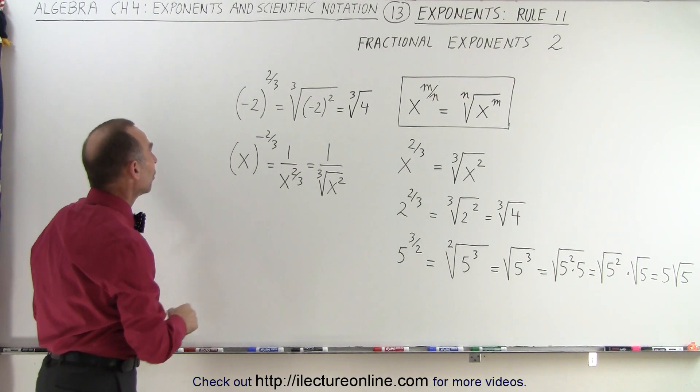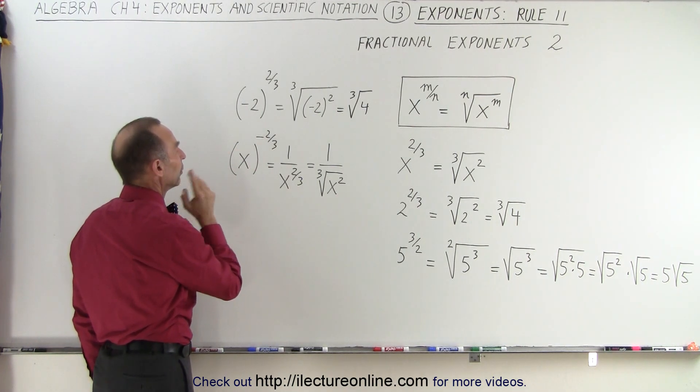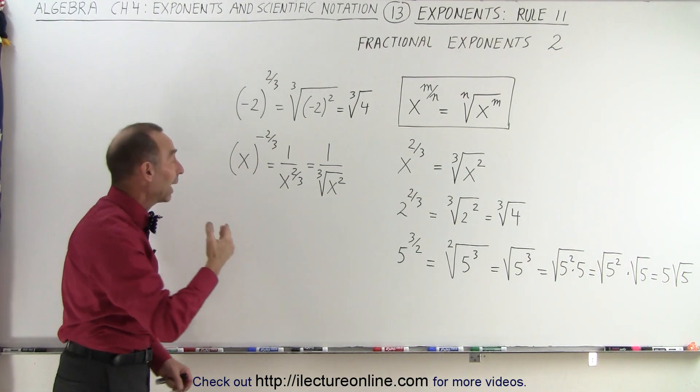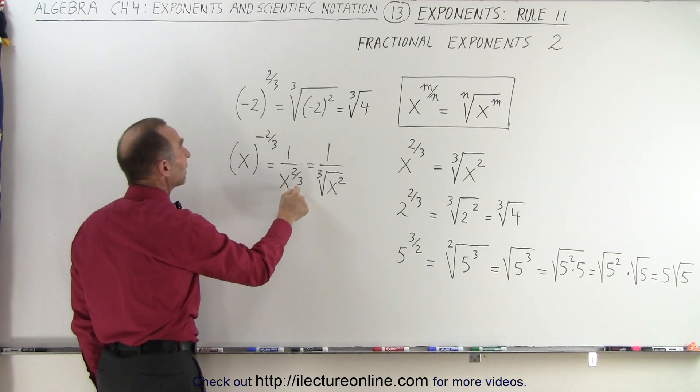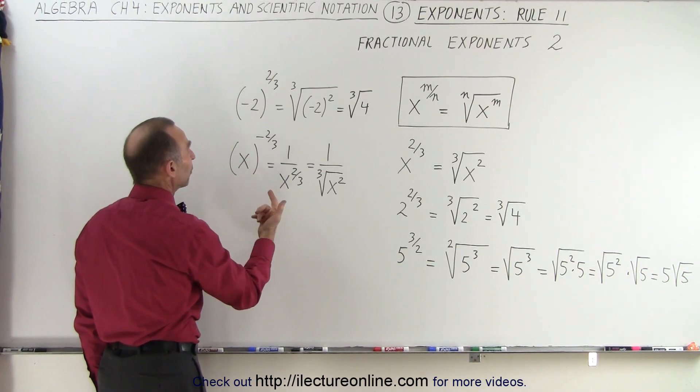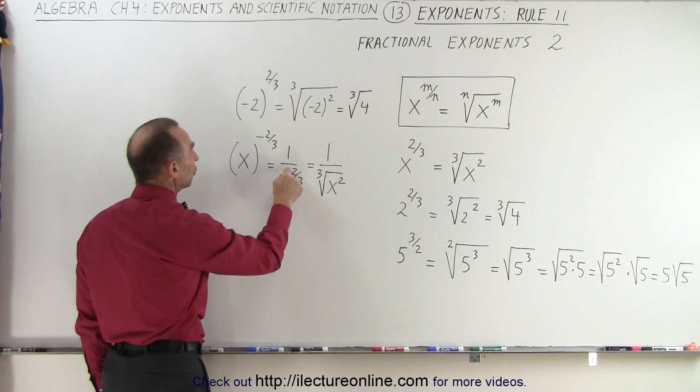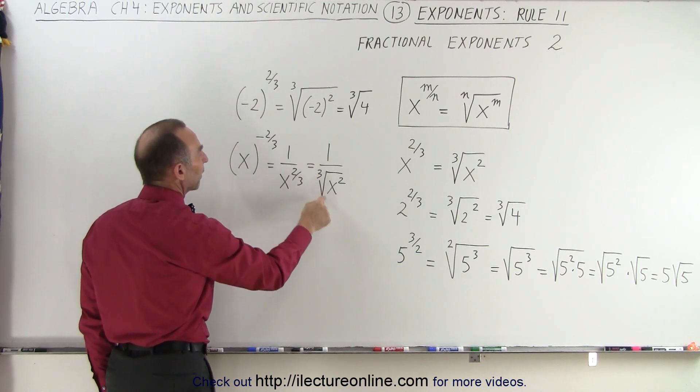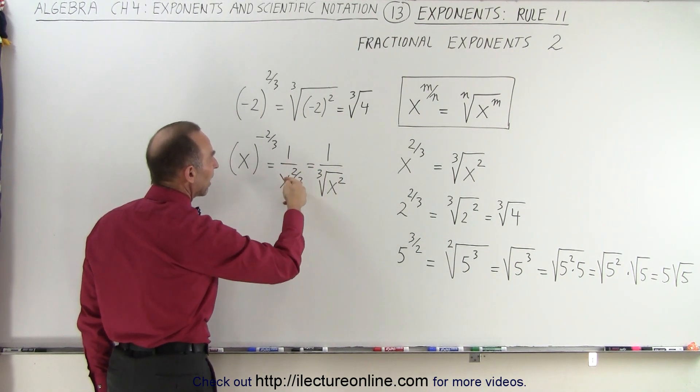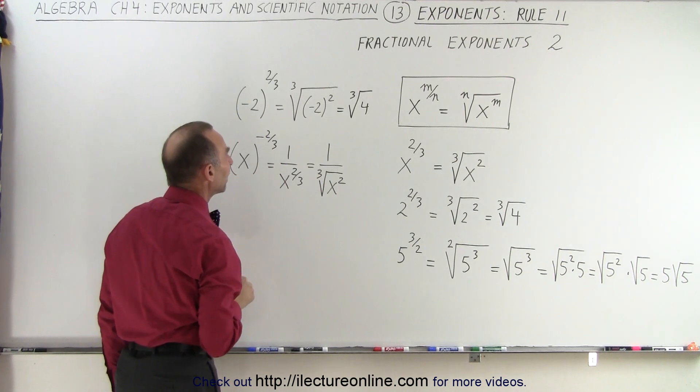And finally, we have x to the negative 2/3 power. Notice we can use the rule by writing x in the denominator and make the exponent positive. And then we simply continue that x to the 2/3 power is the cube root of x squared, but now it appears in the denominator, but the rule then would be exactly the same.